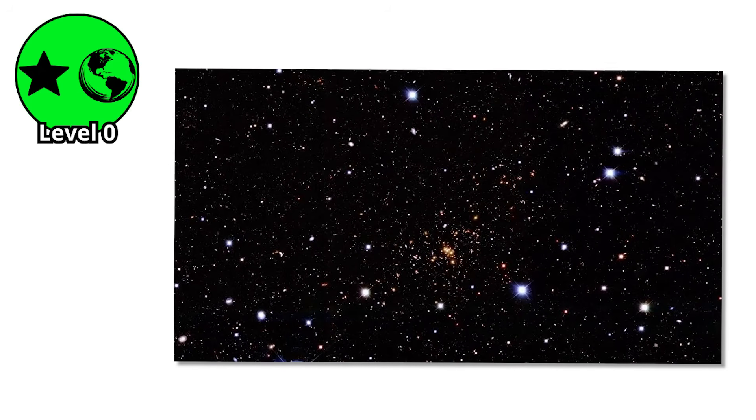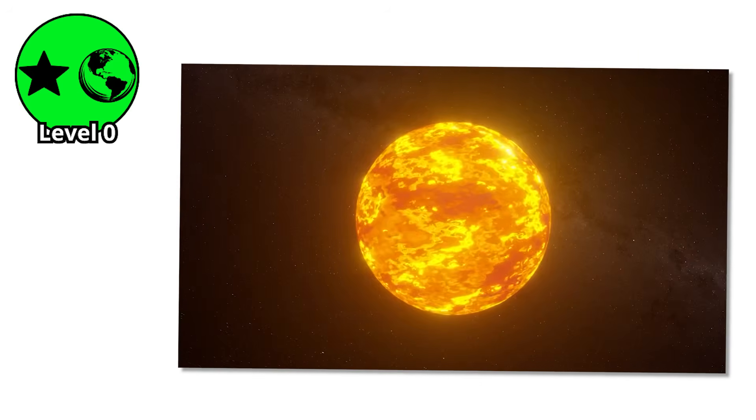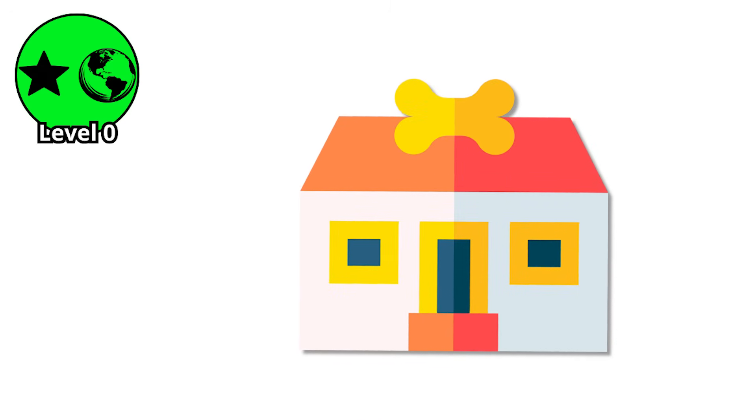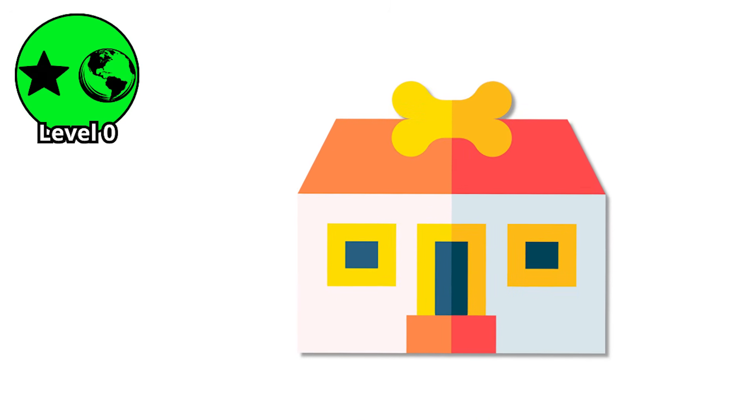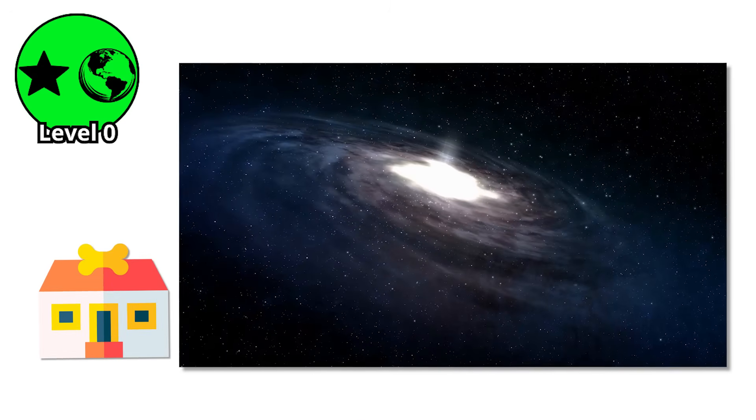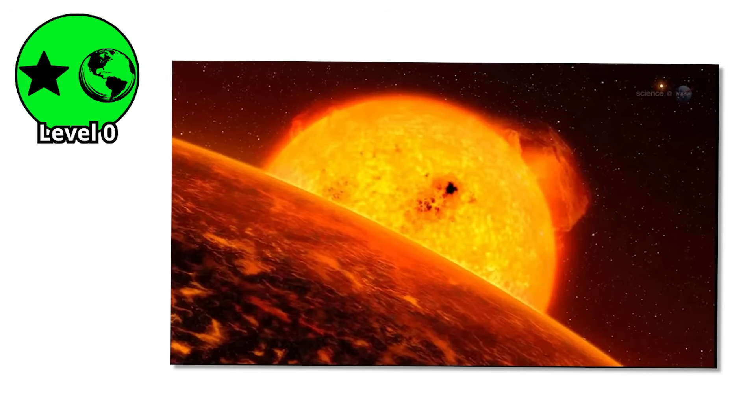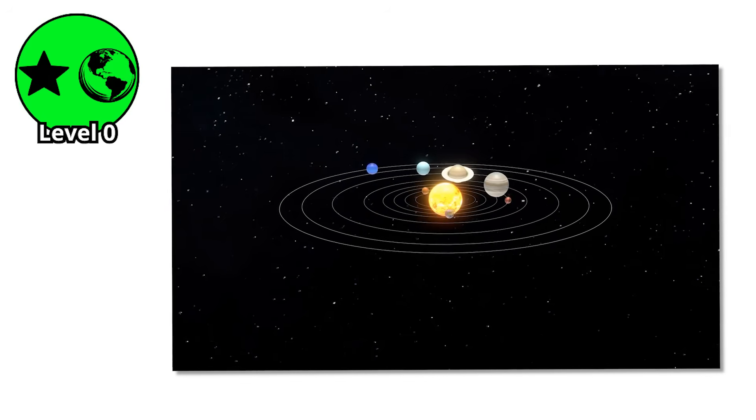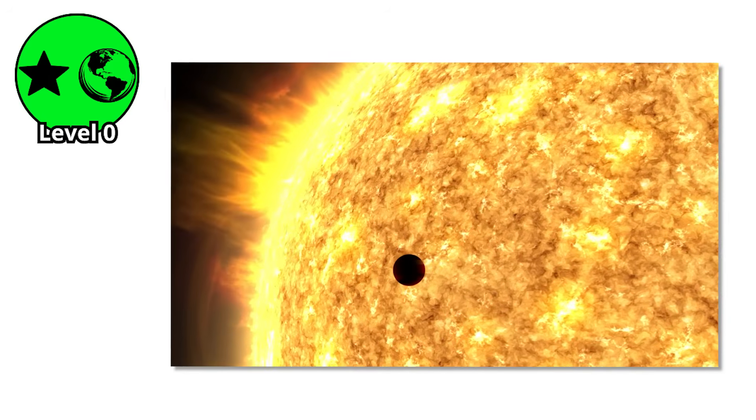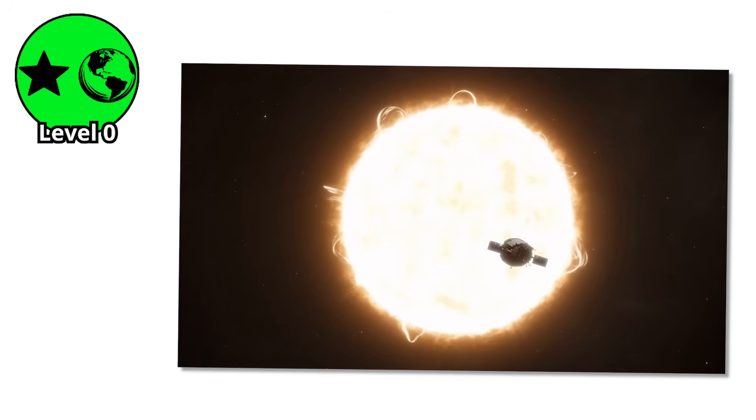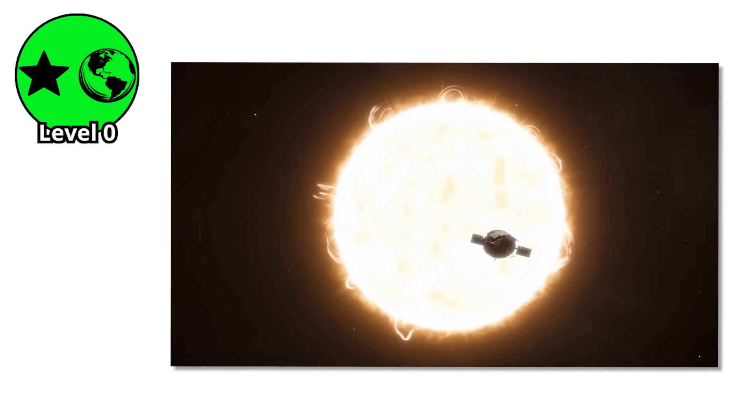While every other star in the galaxy burns out and dies, red dwarfs will still be glowing, hosting the last possible refuges for life in a cold, dying universe. Their incredible longevity means that long after our sun has expanded into a red giant and consumed the inner planets, these tiny stars will continue burning, unchanged, preserving whatever worlds orbit them in an otherwise dead cosmos.